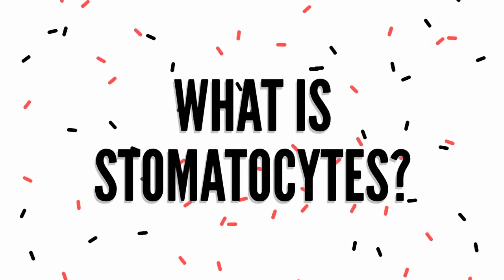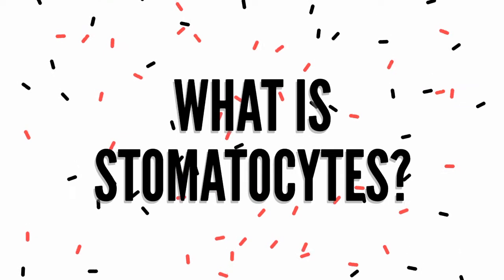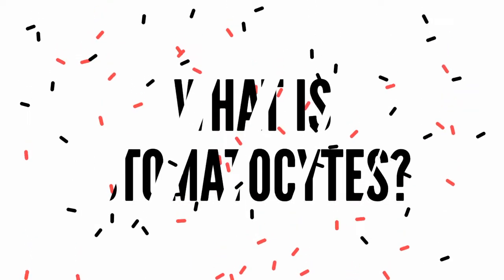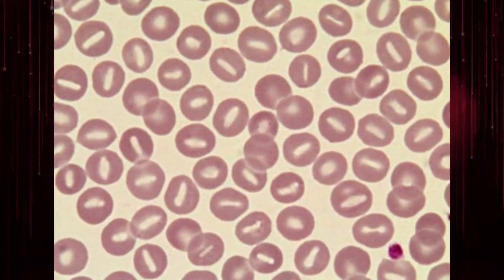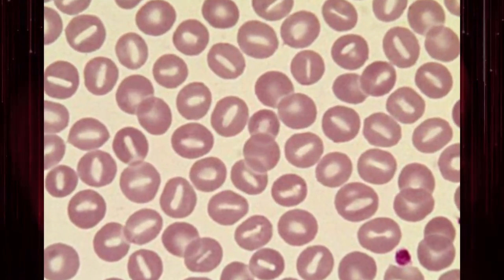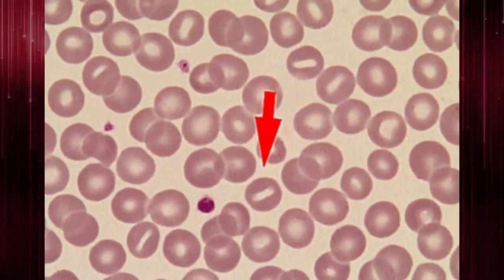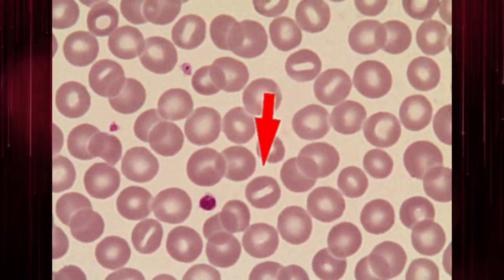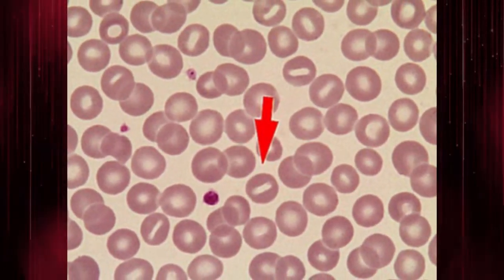What is Stomatocytes? Stomatocytes are erythrocytes with a slit-like central pallor, giving them the appearance of coffee beans or kissing lips.